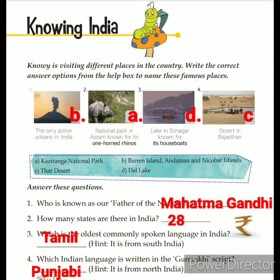The second picture is of a national park in Assam known for its one-horned rhinos. Here you will write option A: Kaziranga National Park. The third picture is of a lake in Srinagar known for its houseboats. You will write option D: Dal Lake. Look at the fourth picture — a desert in Rajasthan. The answer is option C: Thar Desert.